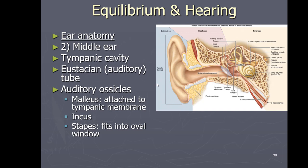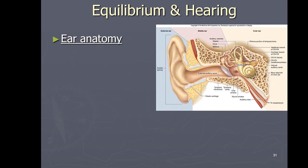The Eustachian tube helps alleviate pressure differences between the inside and outside of the body. For example, if you're in an airplane and your ears start popping, you can open your mouth and it allows the pressures to equilibrate relatively quickly.